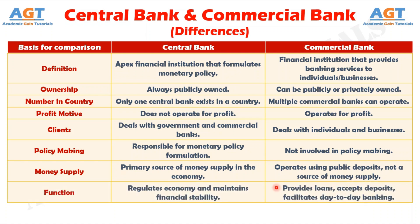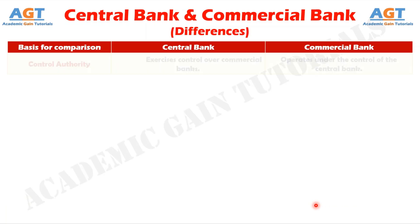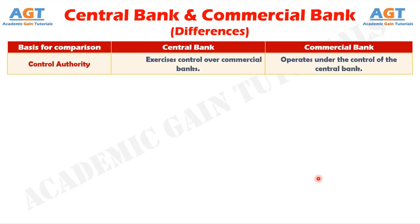Number eight: a central bank focuses on economic regulation and financial system stability, whereas a commercial bank is involved in day-to-day financial services. Number nine: the central bank has authority over and supervises commercial banks, whereas commercial banks operate under the regulations of the central bank.